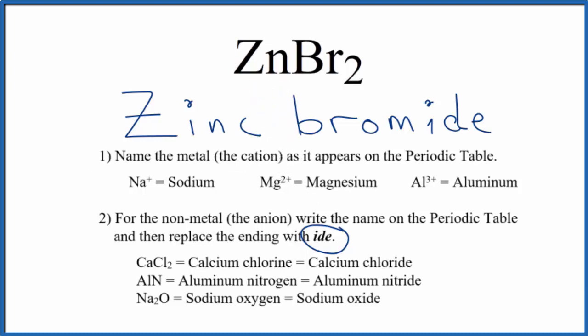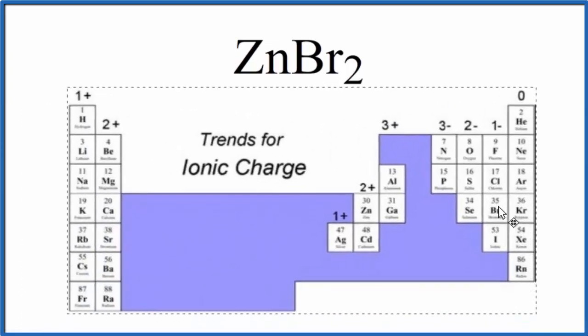Zn is kind of a special case. If we look at this periodic table here, we can see that most of the transition metals, we don't know what the charge is going to be. But for zinc, zinc always has a 2 plus ionic charge. And for that reason, we don't have to write the roman numeral 2.